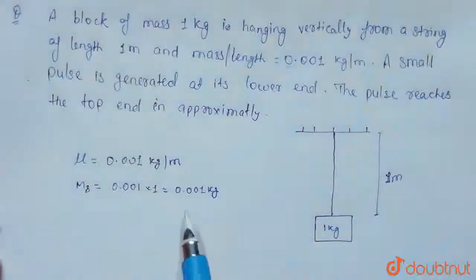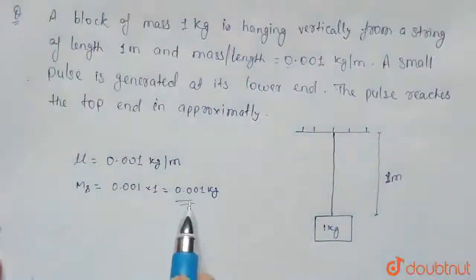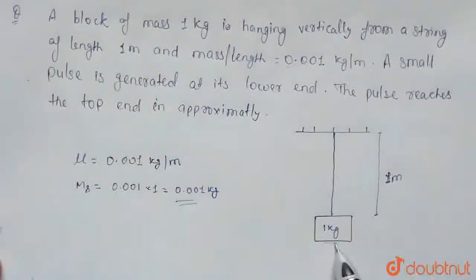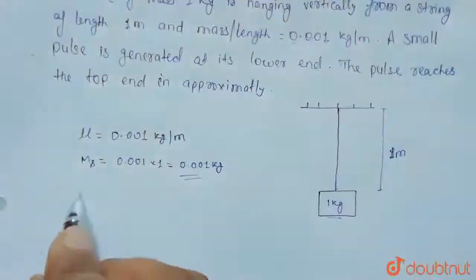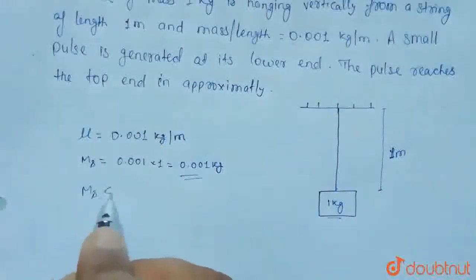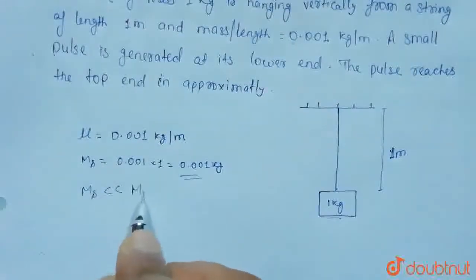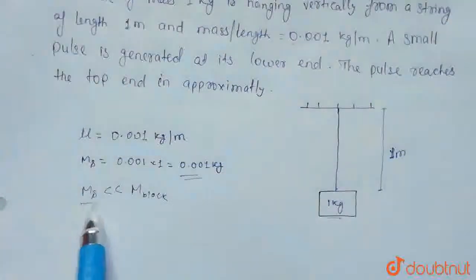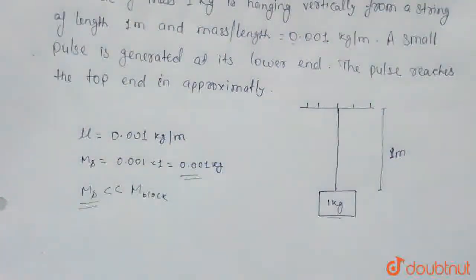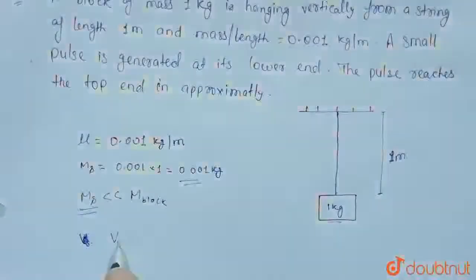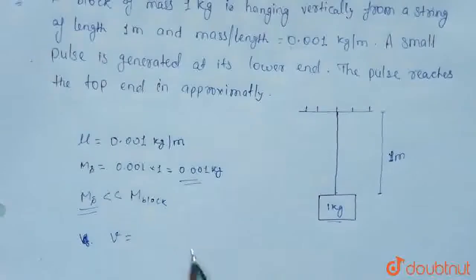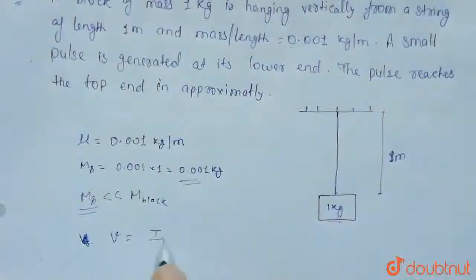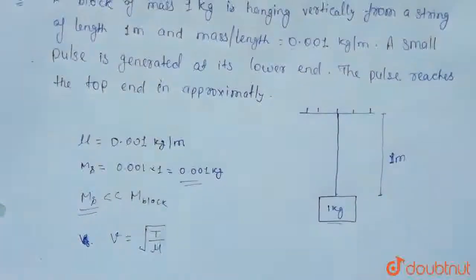So, mass of string का value block के mass से बहुत छोटा है। Mass of string is very, very less than mass of block. तो mass of string इस calculation में neglect कर सकते हैं। Velocity of wave in a string का formula है: square root of (tension in string divided by mu, mass per unit length of string).